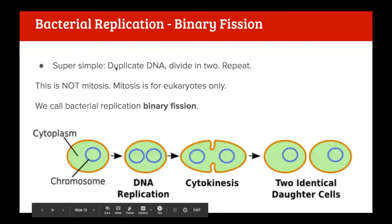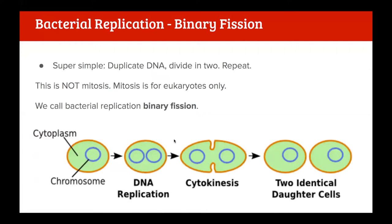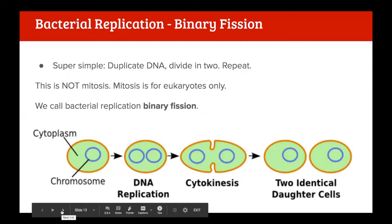Let's look at bacterial replication. The most important thing is that it's not mitosis - there's no anaphase, metaphase, or chromosomes lining up on a metaphase plate. They simply duplicate their central chromosome, duplicate the plasmids as well, and divide in half, with each half having one chromosome. You get two identical daughter cells. A very simple, almost primitive procedure.